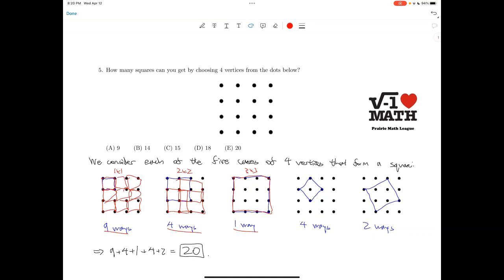And now we get to the more creative cases. This is square root of 2 by square root of 2, and there are 4 of them: 1, 2, 3, 4.